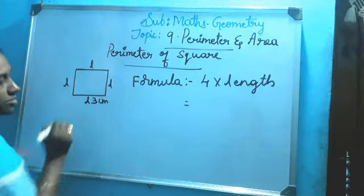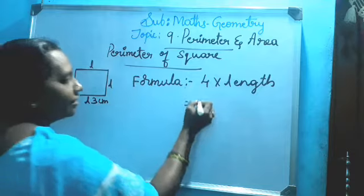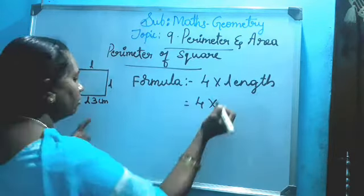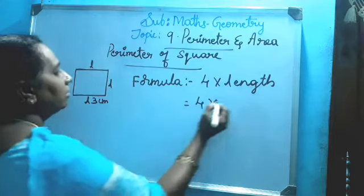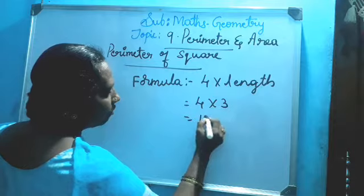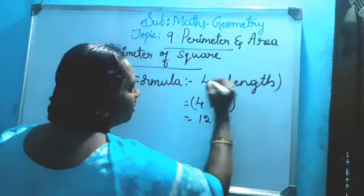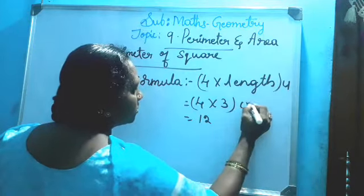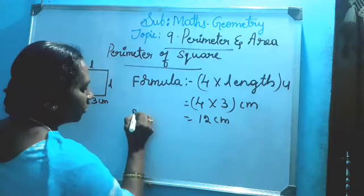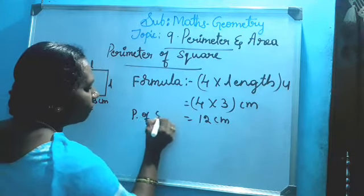Now apply the formula. How many sides are there? Four sides. So four into length, because all four sides are equal. For example, if all sides are 3 centimeters, write 4 into 3. Four threes are 12 centimeters. So it is the perimeter of square.